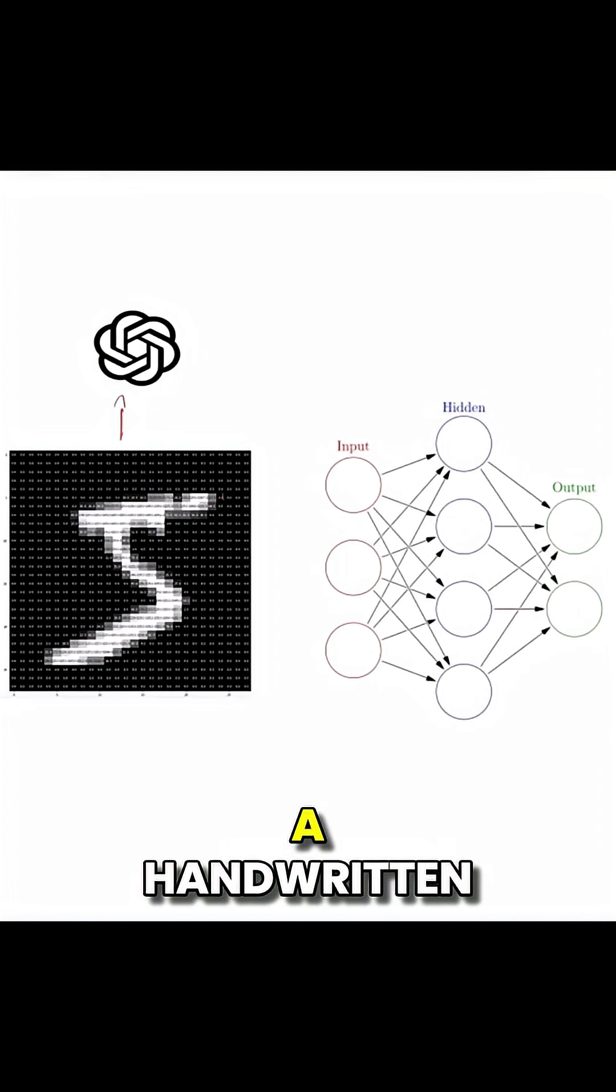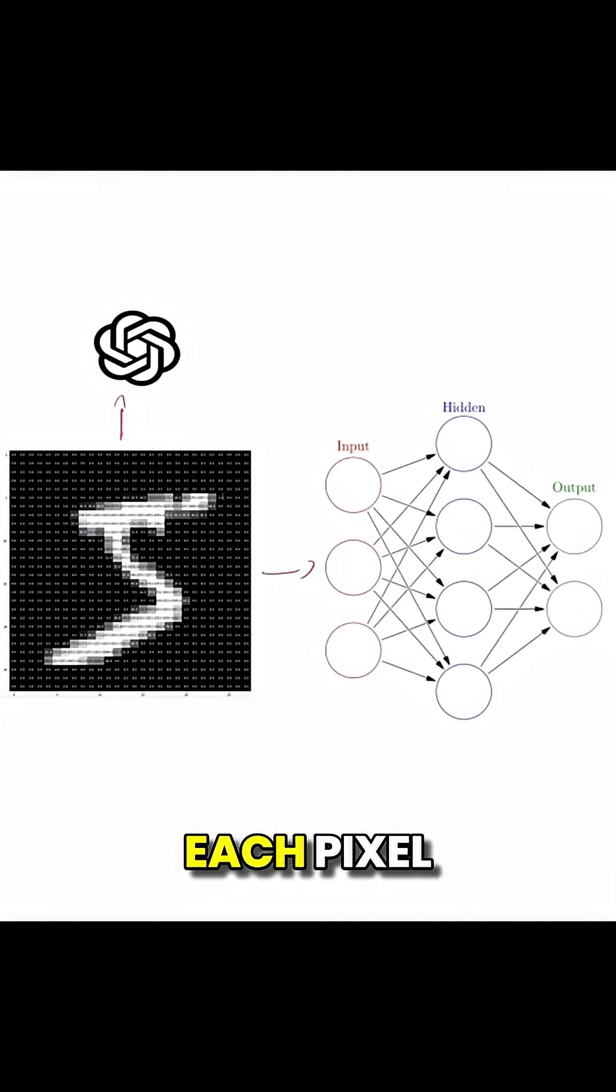Say we give the AI an image like a handwritten number. That's the input. Each pixel in that image becomes a bunch of numbers a network can understand. A computer doesn't see a picture like we do. It sees edges and lines, then compares them to the right answers to make an educated guess.